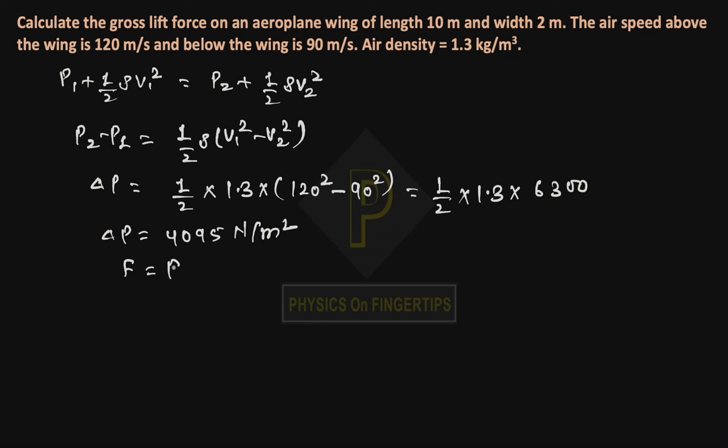Force equals P into A, so we have delta P times A. That's 4095 into area, which is 10 into 2 equals 20. Multiplying, we get 81,800 Newton.